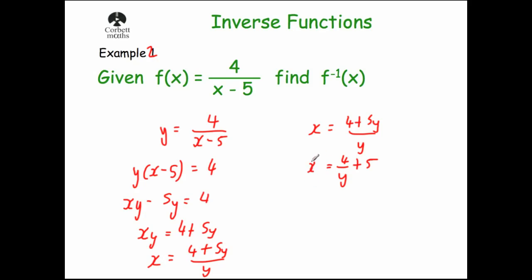Now we've made x the subject. Writing in f⁻¹ notation, we replace y with x: f⁻¹(x) = 4/x + 5. So if the function is 4/(x − 5), the inverse function is 4/x + 5.